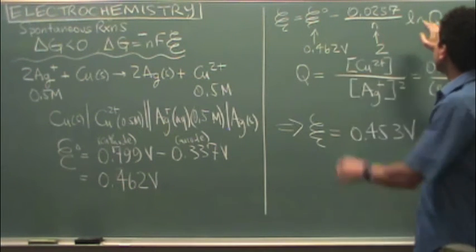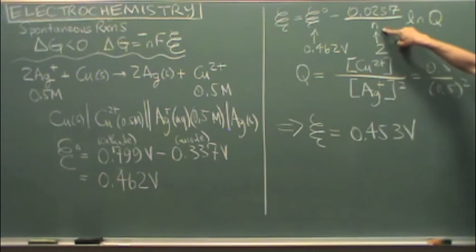But that doesn't mean the rest of it is 0. So you still have to put in the number of electrons that are canceled out. In the case of copper 2 plus, that would be 2.